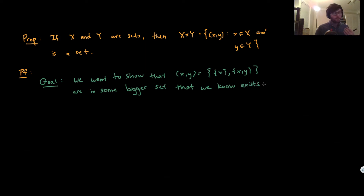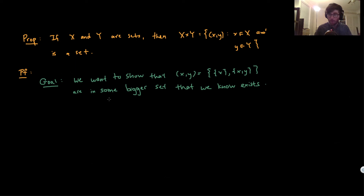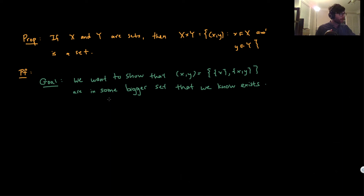A lot of these proofs work by showing that everything we care about is in some bigger set, and then using the comprehension schema to imply the existence of the set we cared about. If we can show all ordered pairs (x, y) are in some big set, then by the comprehension schema the Cartesian product has to be a set. Remember: the comprehension schema requires another set first—without that, you run into things like Russell's paradox.